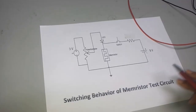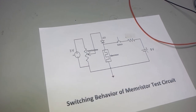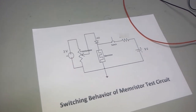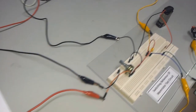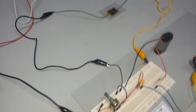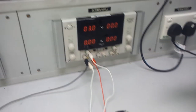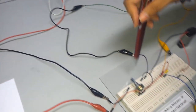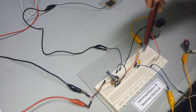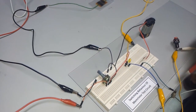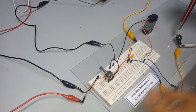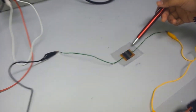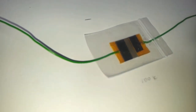So, to validate this circuit, we assemble it on a breadboard. As you can see, we applied 3 volts to the potentiometer and LED. This is the switch for the memristor, and this is the fabricated memristor cell.